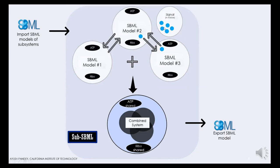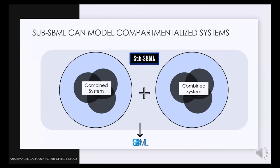What happens in the combined system is that there is only a single species called ATP shared, and that is exactly the species used in all of the reactions in the different subsystems. Similarly, if there is a signal in the external environment and that signal is transporting in and out of subsystems two and three, that is another kind of interaction that can be modeled using sub-SBML. As you can see from that picture, we can basically model biological systems that have multiple compartments together.